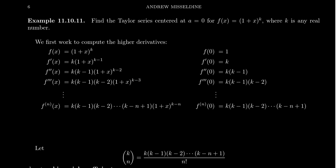By mathematical induction, we can see that the nth derivative of f will look like k·(k-1)·(k-2)·...·(k-n+1) times (1+x)^(k-n). We started with k and subtracted n from it because we've done n derivatives. This pattern follows by induction.